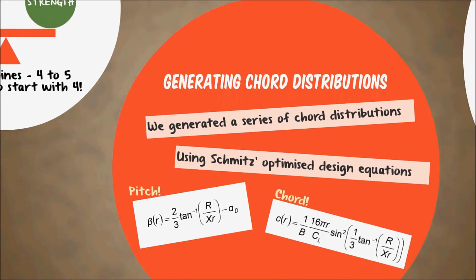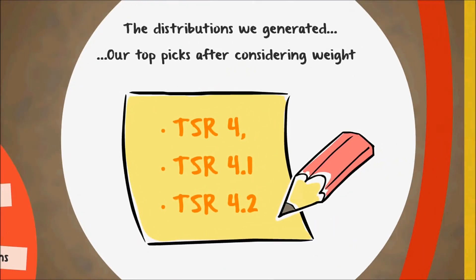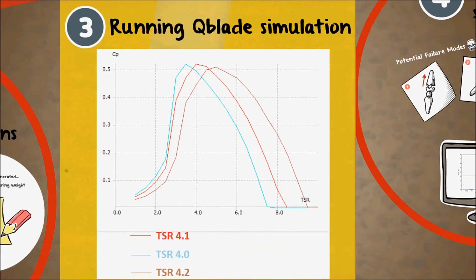Next, using Schmidt's equations, we produced a series of chord and pitch distributions. We didn't just do one distribution, we did a few by varying TSR slightly. And we found that for TSR range between 4 to 4.2, selecting 4.1 gives us the best CP and reasonably low weight.